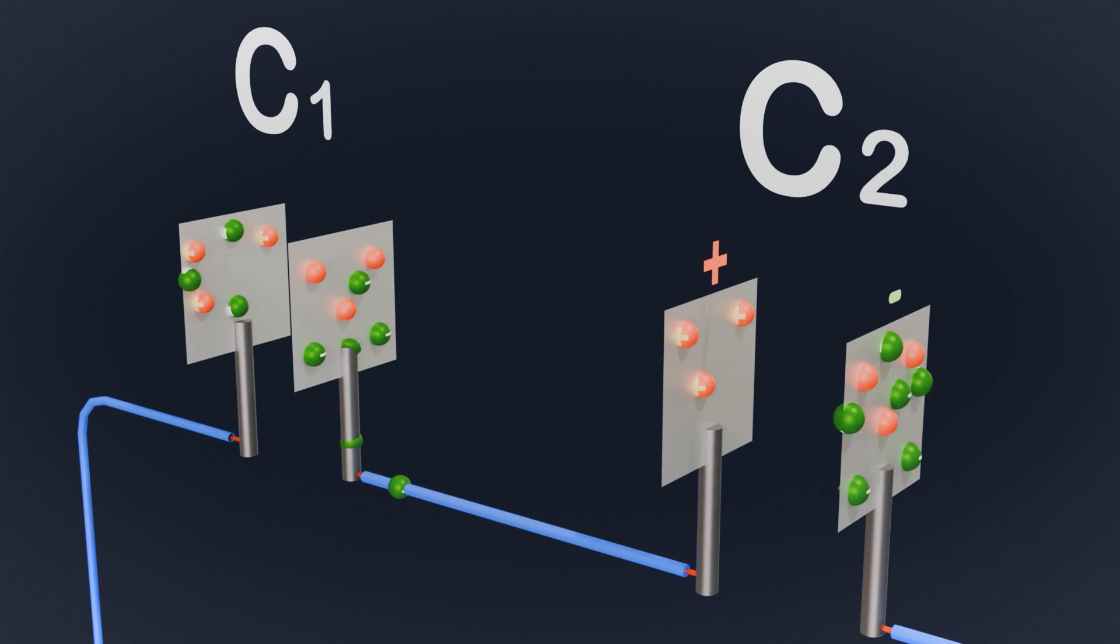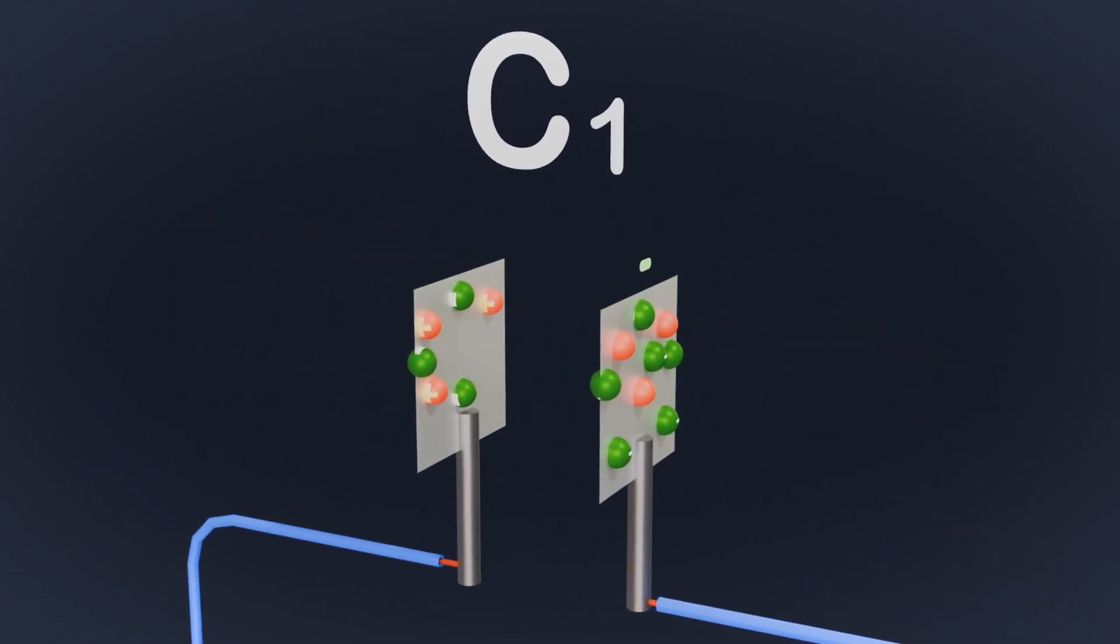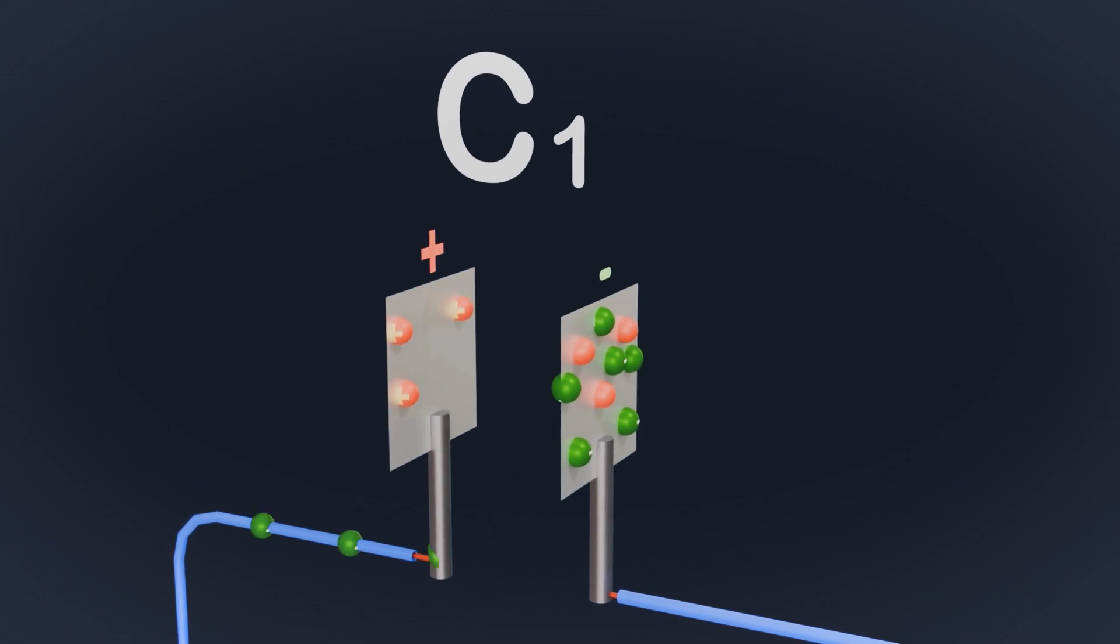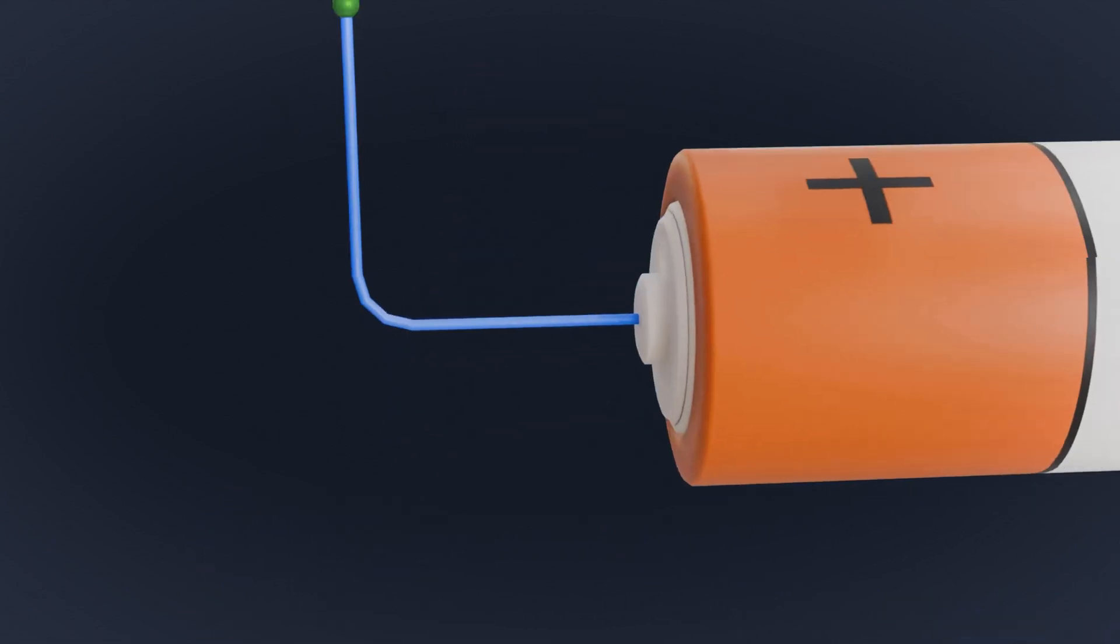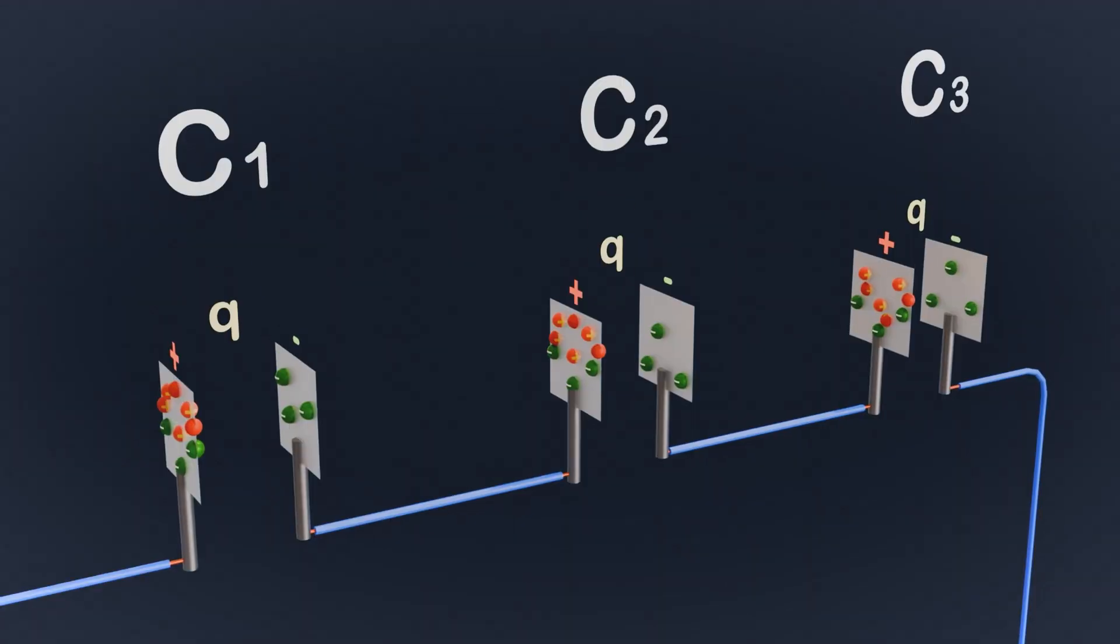This chain reaction continues. Electrons move to C1's plate, making it negative. The last plate of C1 loses electrons, becoming positive, and the freed electrons are pulled into the positive terminal of the battery. As a result, every capacitor has the same charge.